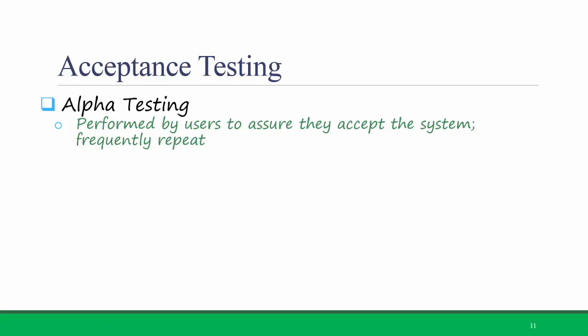Finally, there's acceptance testing, and you should know the categories on this slide for the exam. Alpha testing is performed by users to assure they accept the system and frequently repeats earlier tests, but it does not use actual data. Here we would give the Titanium system that we created to a professor and ask them to click around on the different buttons, but not actually use it for their class.